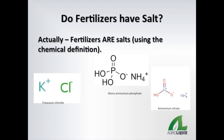The question is often asked about how much salt do our fertilizers have. Well, in strict chemical terms, fertilizers are salts. One of the most recognizable forms on this chart is KCl, or potassium chloride — that compound is 0-0-60 potash. The compound in the middle is monoammonium phosphate, or 11-52-0. The third compound is ammonium nitrate, a common nitrogen fertilizer. As you can see, they all have a positively charged ion and a negatively charged ion, which meets the definition of a salt.